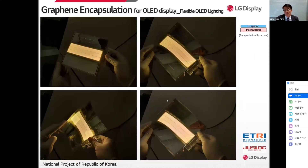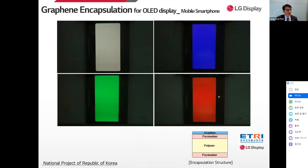This slide shows a flexible OLED lighting device with graphene film encapsulation. We've used the combination of two layers of graphene and inorganic silicon nitride passivation layer as an encapsulation structure to realize this flexible OLED lighting device. This slide also shows a smartphone with graphene film encapsulation — this is the first time in the world. Through this result, we can confirm that graphene can contribute to performance enhancement of the inorganic silicon nitride passivation layer as an encapsulation structure.